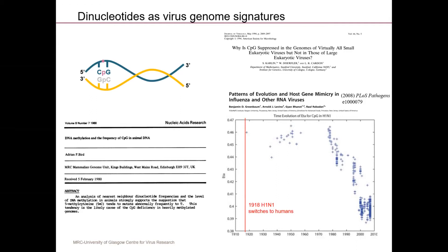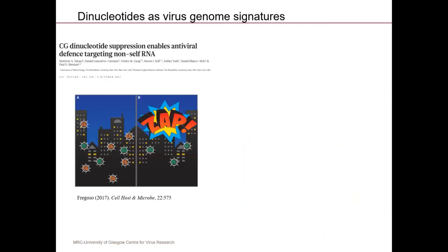So there's some dependency of the host with this genomic signature, and the question is: what is the mechanism causing this? Very recently, a 2017 paper found an antiviral molecule called ZAP. ZAP is part of the interferon response — essentially the first line of defense our cells have against viruses — and what ZAP does is target CpG-rich viral RNA and degrade it, creating selective pressure against CpGs in viral genomes.